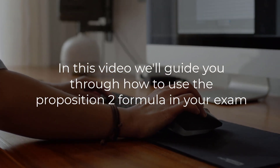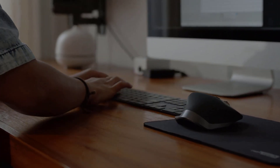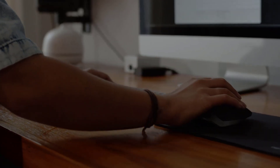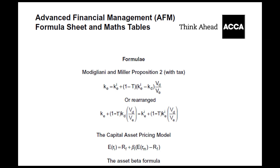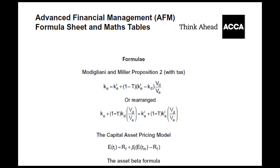Many AFM candidates seem to struggle to apply the Proposition 2 formula, and even struggle in some cases to recognize when it should be used. From the 2024 exam onwards, the AFM formula sheet has been adapted to include a rearranged version of the Proposition 2 formula. The rearranged formula has been designed to be spreadsheet-friendly, although the previous version remains on the formula sheet.